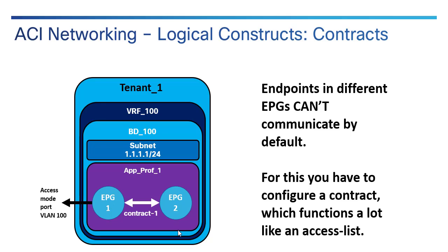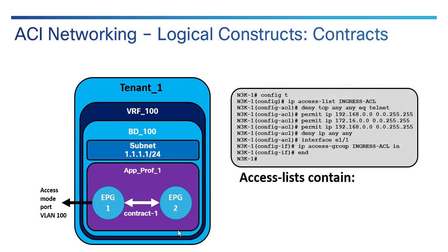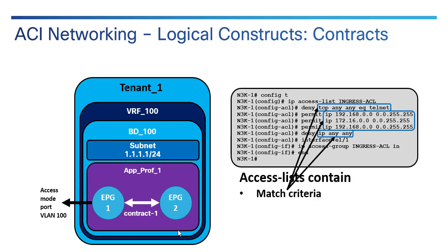A contract functions a lot like an access list. Just as a VLAN is not really exactly the same as a bridge domain, an access list isn't exactly the same as a contract, though they share some characteristics and it's one way of understanding it. Access lists contain match criteria — are you going to match on TCP, on IP? If matching on IP, what IP ranges? If TCP or UDP, what port ranges? ICMP and so forth. You're specifying match criteria.